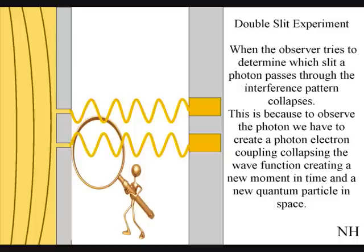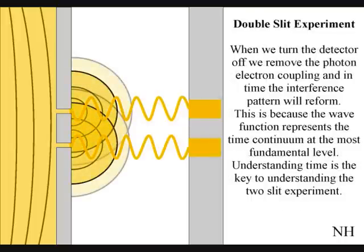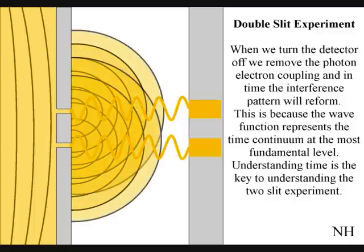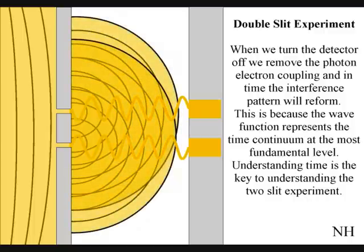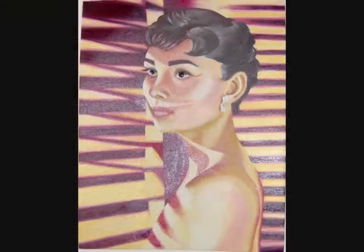If we turn the detector off, we remove the photon-electron coupling, and in time, the interference pattern will reform. Just like in Newton's first law of motion, the interference pattern will continue to maintain its state unless acted upon by an external force.